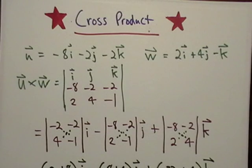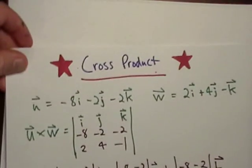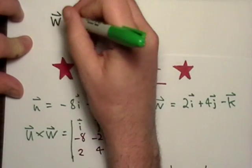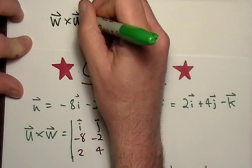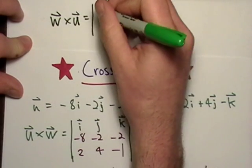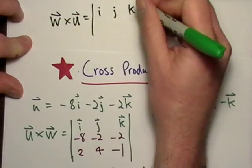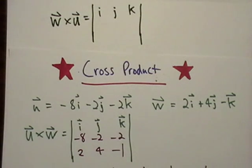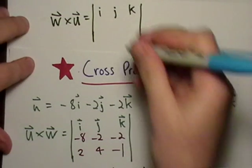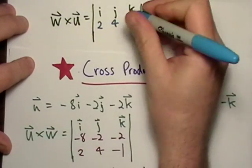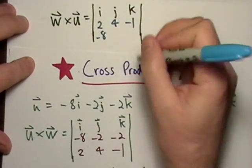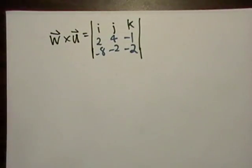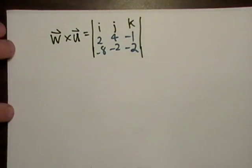Now the next thing we're going to do is we're going to cross them the exact opposite other way around. So I'm just going to write W cross U. I'm going to put my IJK stuff up here. My IJK business. All right. I'm an idiot. Two, four, negative one. Then we got, what, negative eight, negative two, negative two. It's very sloppy. So let's just cross them again and see what happens.